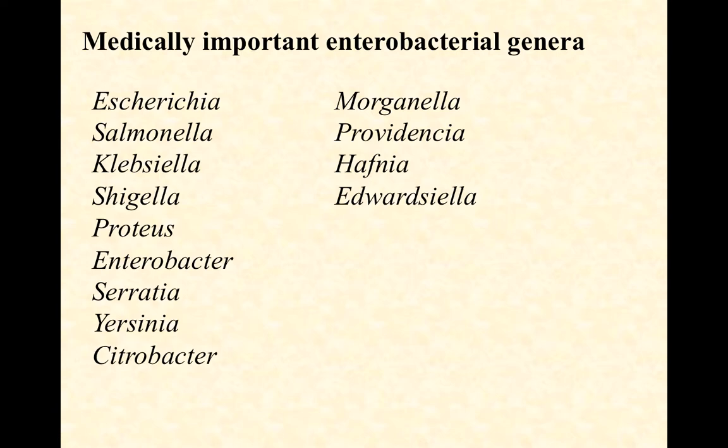Continuing the list: Citrobacter behaves very much like E. coli. Then Morganella, Providencia, Hafnia, and Edwardziella. Those last four are far less common — they are medically important because they do cause some infections and you will eventually see them in clinical careers, but they're not the most common. The first four on the left are the ones you're likely to see most often. I want you to get familiar with all of these names — both pronunciation and spelling.